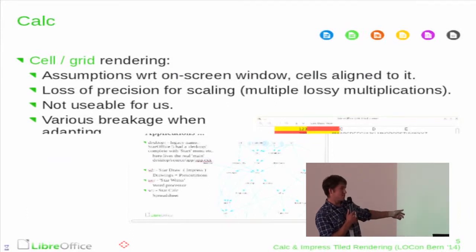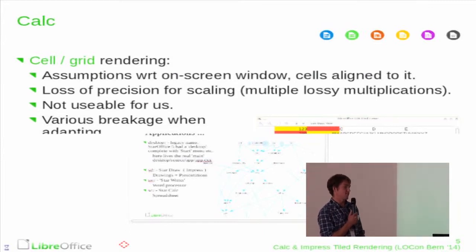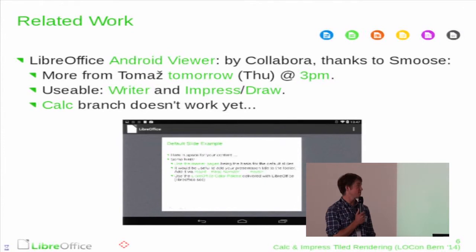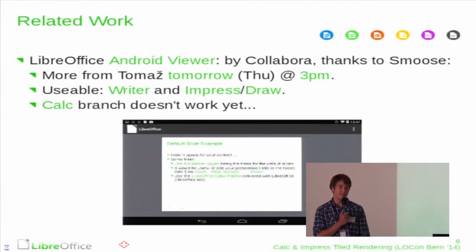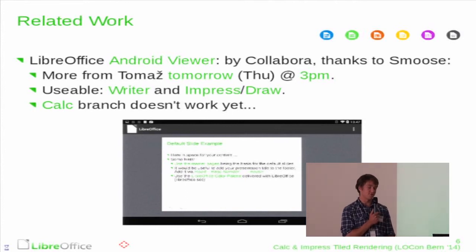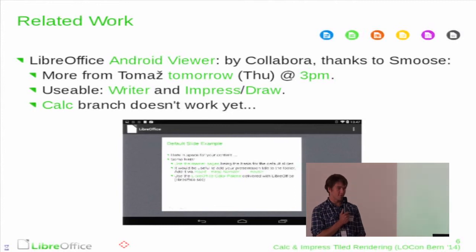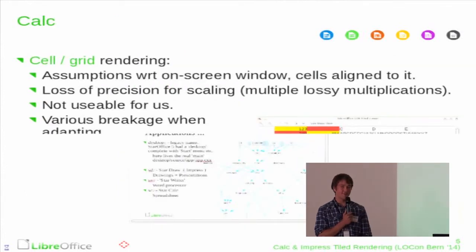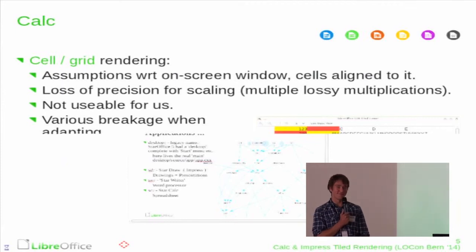This is a screenshot of the GTK tile viewer, which was implemented at the start of the summer to allow testing of the work, since we don't have any other easy way to check that things work. For actual use, we have the Android viewer, mostly implemented by Tomas who will be talking about this tomorrow. It was initially implemented using Writer, for which tile rendering had already been implemented, and once my Impress and Draw work was ready that was plugged in and worked. The Calc branch unfortunately doesn't work — I only built it over the weekend and it shows a blank white screen — so I'm working on debugging that and hopefully we'll have something usable in the future.